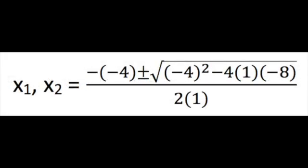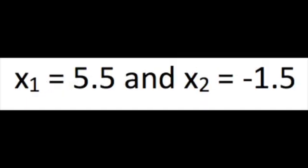In this quadratic equation, your a is 1, your b is -4, and your c is -8. Plugging those values into the quadratic formula gives two possible x values: x₁ = 5.5 and x₂ = -1.5.